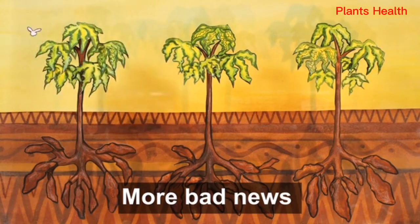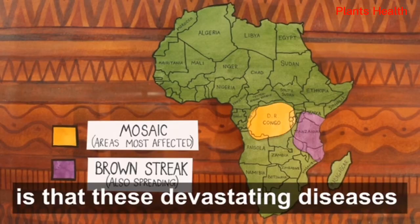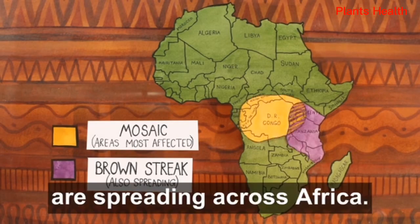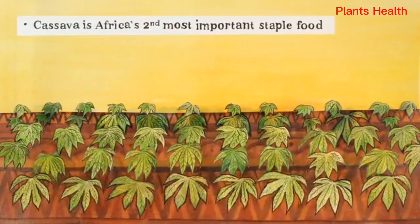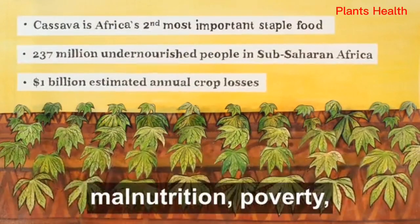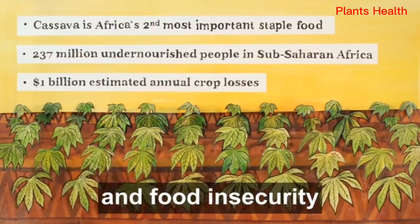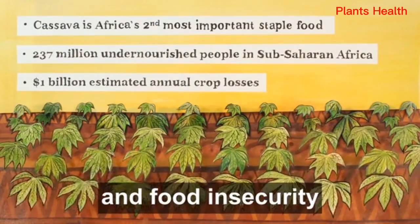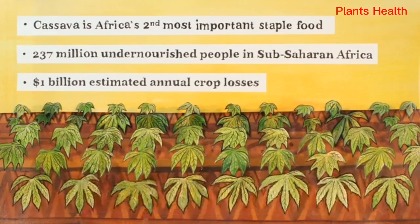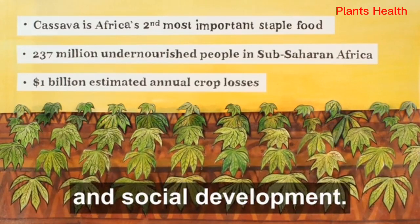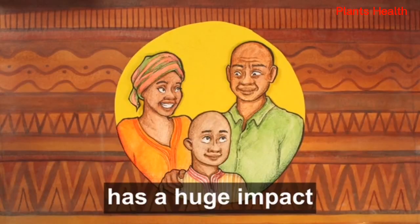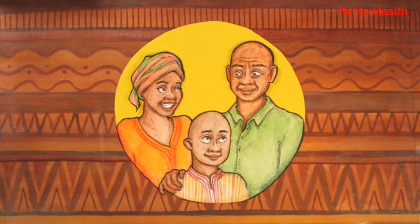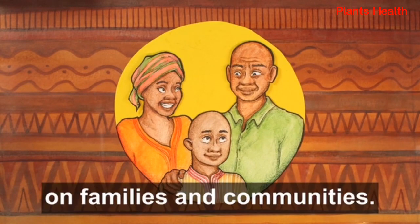More bad news is that these devastating diseases are spreading across Africa. Losing these crops leads to malnutrition, poverty and food insecurity, hitting these countries' economic and social development. Not having enough food or income has a huge impact on families and communities.